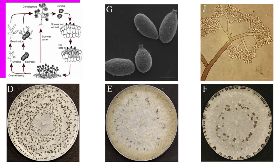Post-entrance, Botrytis cinerea utilizes compounds such as Botrydial, Botcinic acid, and phytotoxic proteins in the necrotizing of plant tissues, rapidly oxidizing cells it makes contact with by inducing programmed cell death.